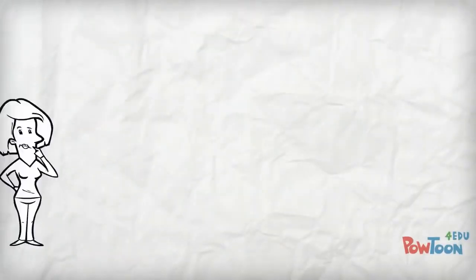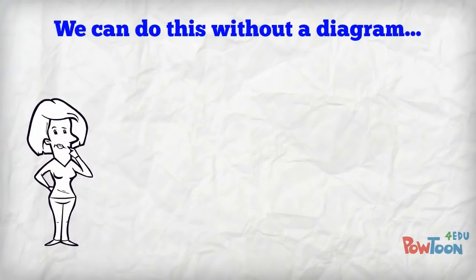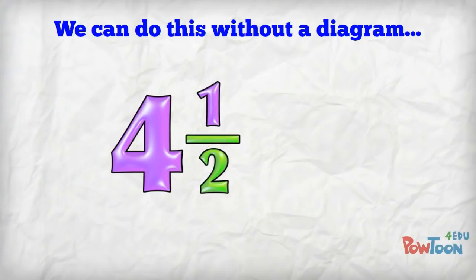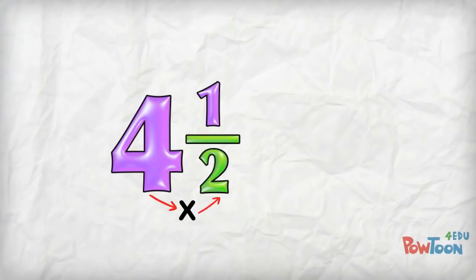We can also do this work without using a diagram. Let's take another example: 4 and a half. Each whole is worth 2 because our denominator is 2. I have 4 wholes, so that means I have 4 lots of 2, or 4 times 2. That's 8.